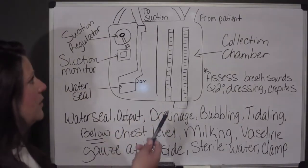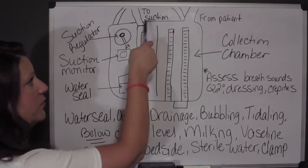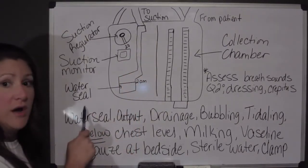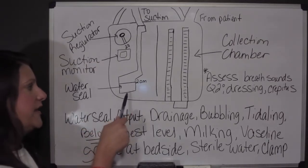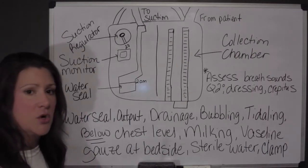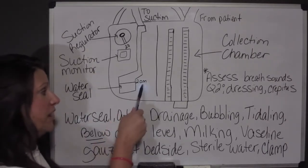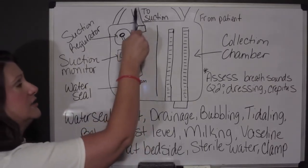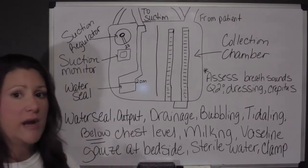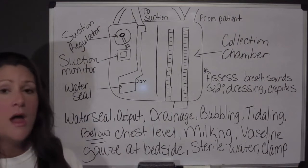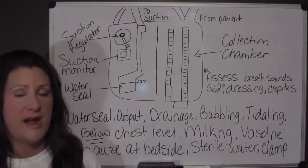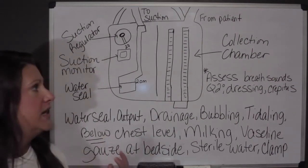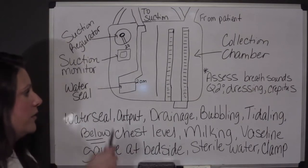The next part I want to talk about is this part up here that I've got labeled 'to suction,' and you'll see that this part is connected to what I have labeled as the water seal chamber. It's important that the water seal chamber is maintained at a certain level of water — sterile water — and you're going to maintain that level at 2 cm. This water seal chamber creates a place for the air to enter but not to escape. It's like a one-way valve. If you didn't have this water seal chamber to trap whatever it was we're trying to drain, it would just drain right back into the patient. So the water seal chamber is very important.